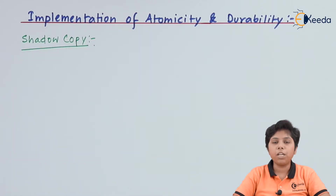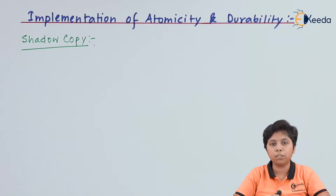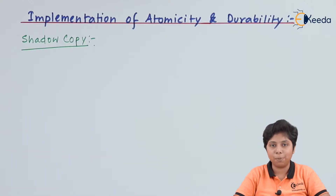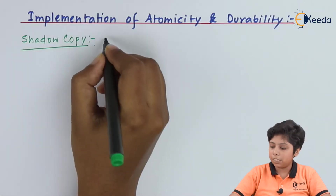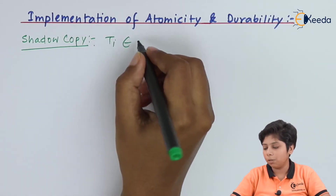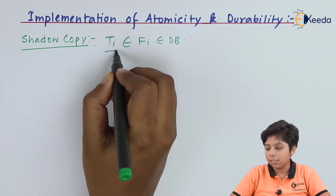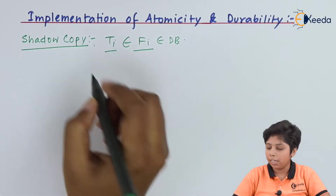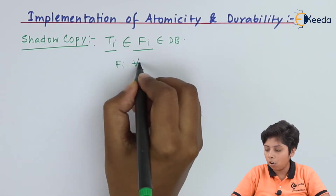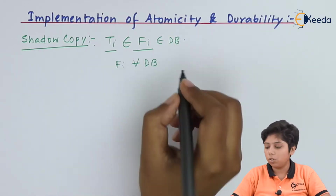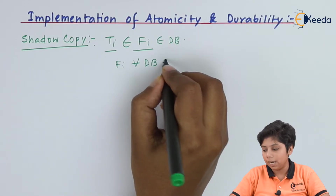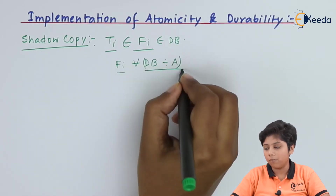The shadow copy of a database assumes that if any transaction is accessing a particular portion of the database, it considers that the database consists only of that file. For instance, if transaction Ti operates on file Fi belonging to database DB, then Ti considers Fi as representing all parts of that DB. So if the DB is divided into any area, Fi is considered part of that area.